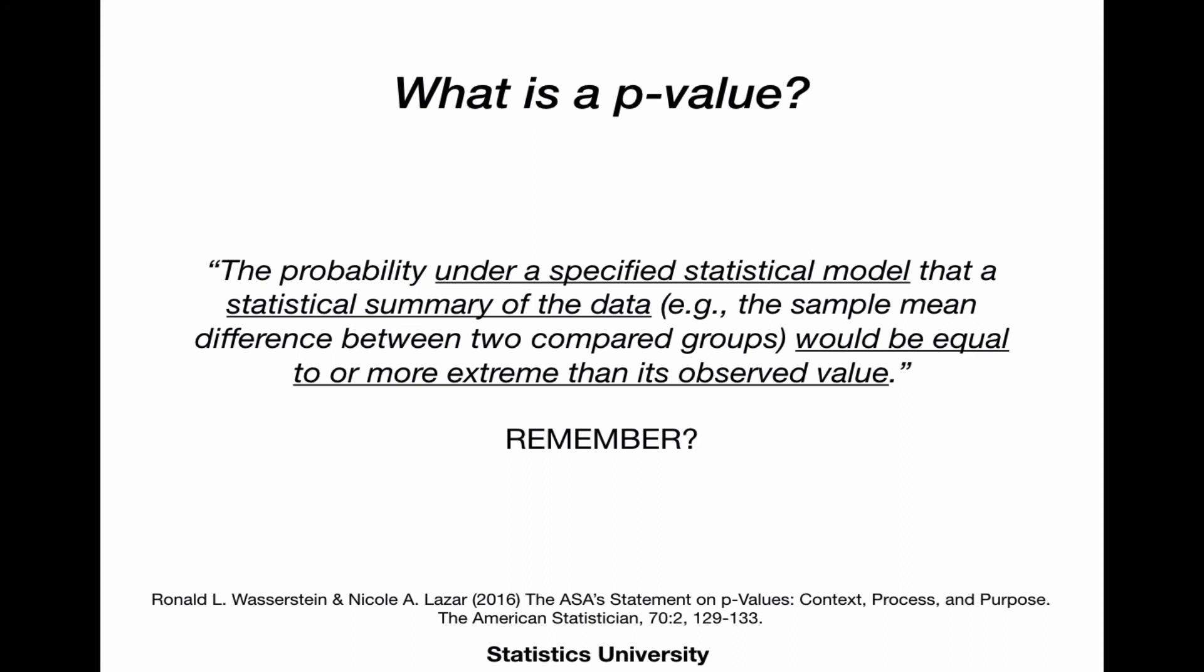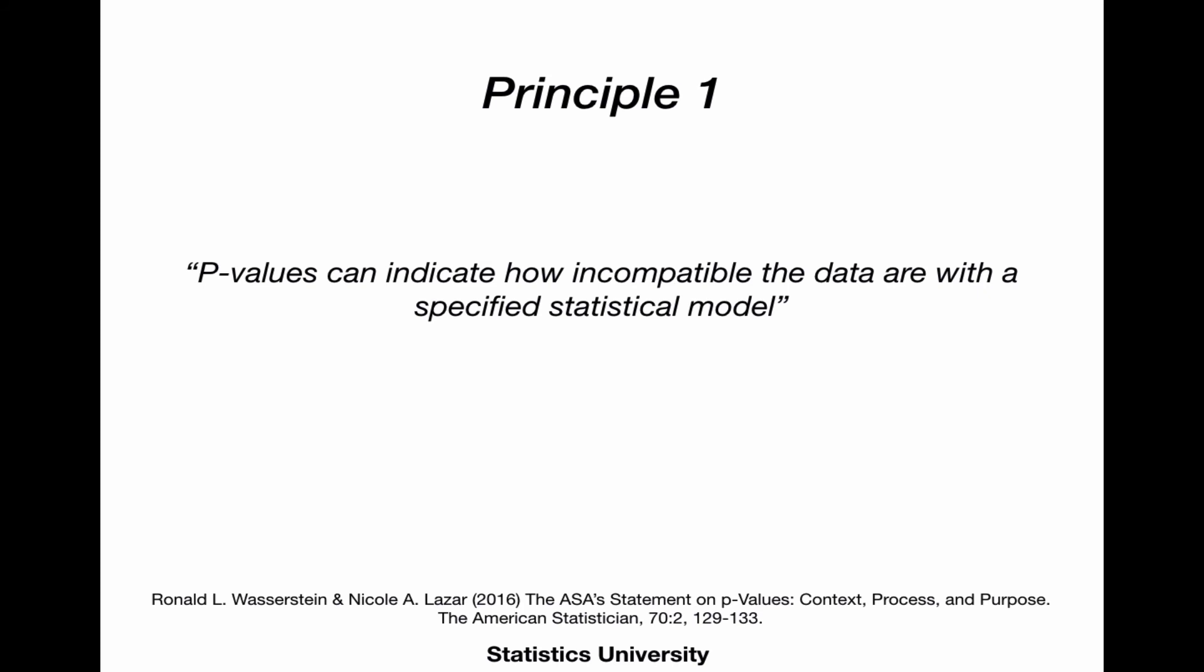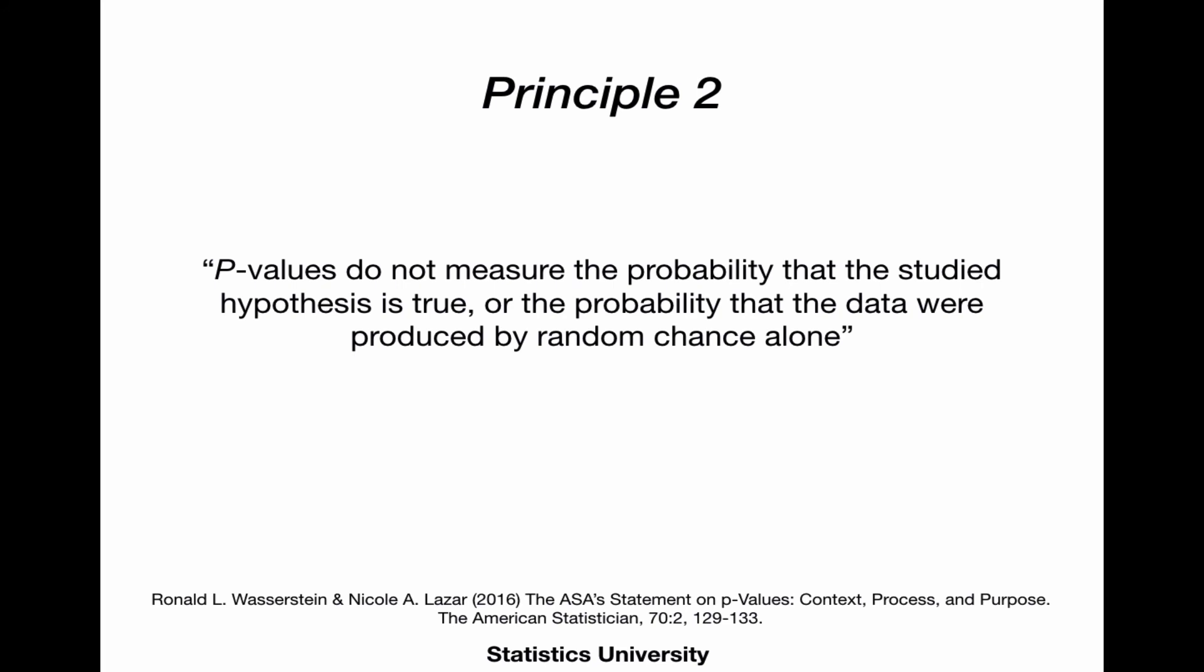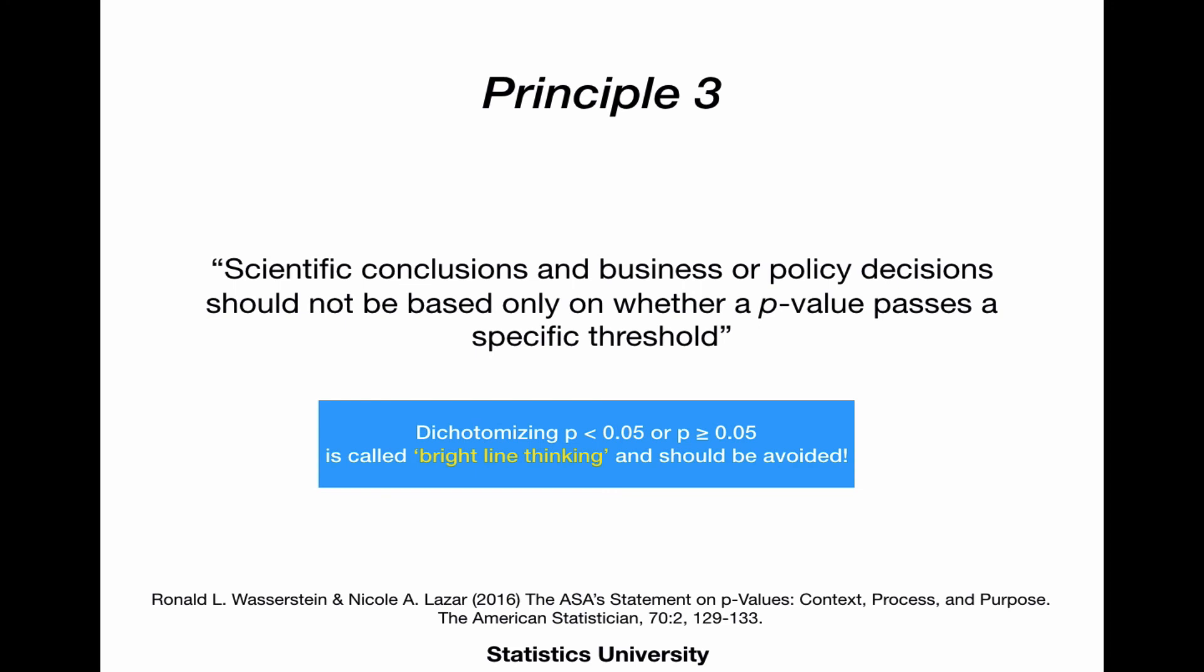But the ASA also issued a number of principles that are important to remember and to think about. P-values can indicate how incompatible the data are with a specified statistical model. That's what they're there for. P-values do not measure the probability that the studied hypothesis is true or the probability that the data were produced by random chance alone. And that, as we've already seen, is because we calculate the p-value under the assumption that the null hypothesis is true.